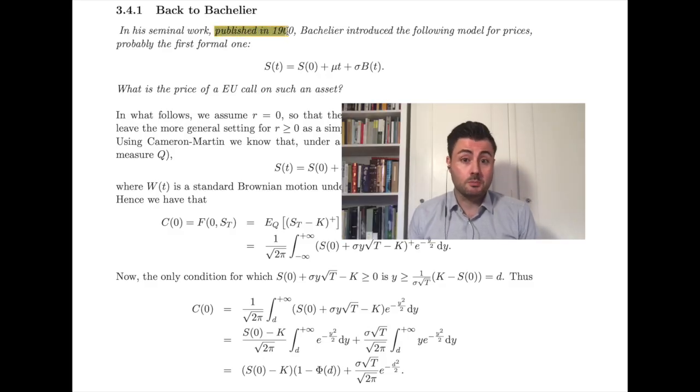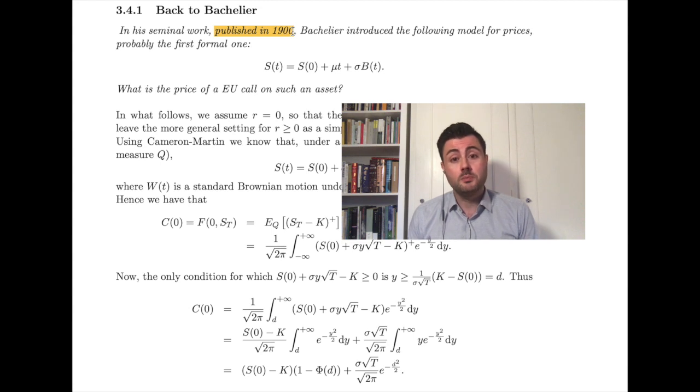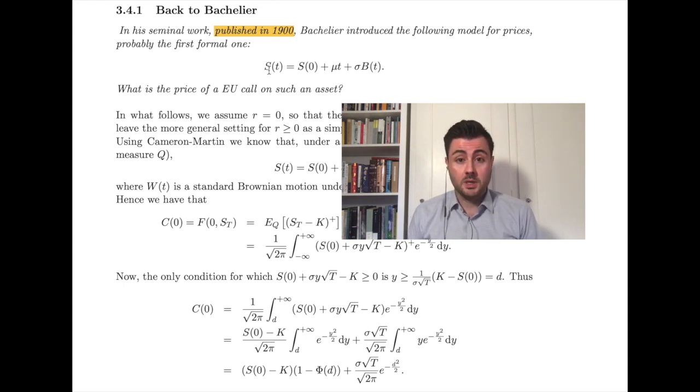In 1900, Bachelier introduced the model in which the price at time t of the risky asset is equal to s0 plus mu times t plus sigma bt, where bt is a standard Brownian motion under the physical measure. This process is what we call an arithmetic Brownian motion. Assume that we want to compute the value of a European call at time 0 under such a hypothesis, so if the risky asset follows an arithmetic Brownian motion. To simplify our computations, but also to leave an interesting exercise to you, we take our risk-free rate r to be equal to 0. For the rest, we just have to apply our Black-Scholes and Merton theorem, as we did in the standard framework of the geometric Brownian motion.